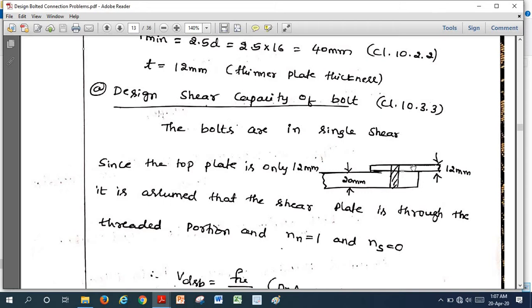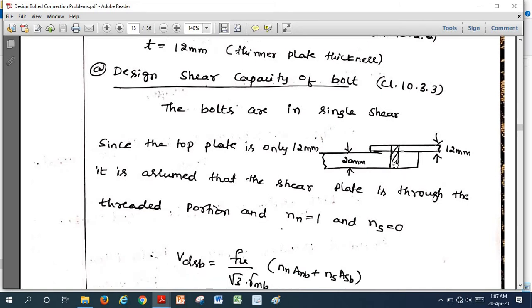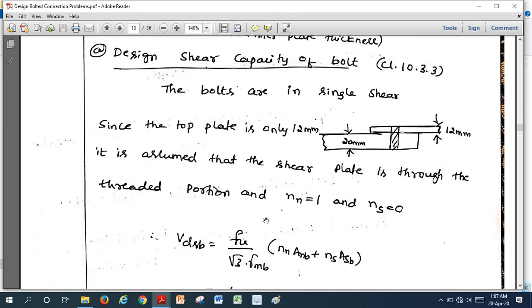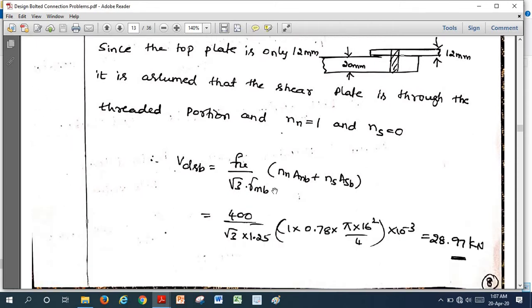If you take two bolts, if you go for arrangement of plates here, top plate is 12 mm, bottom plate is 20 mm. Since the bottom plate is having more thickness, the threaded portion may fall in the shear plane. Therefore, I have taken nn equal to 1 and ns equal to 0.